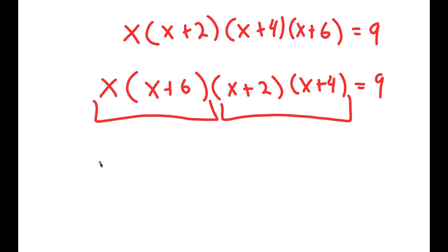So x times (x+6) is x² + 6x, and (x+2) times (x+4) is x² + 6x + 8.